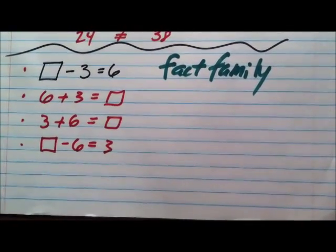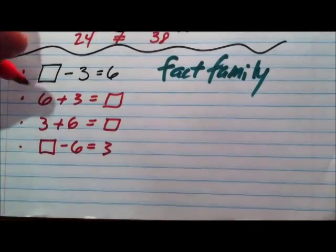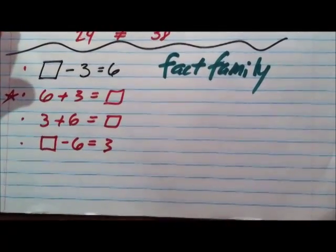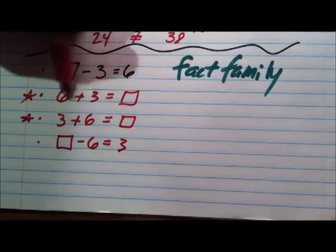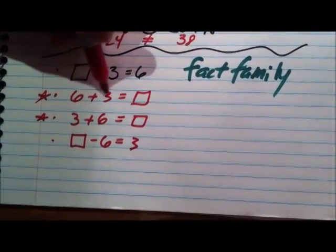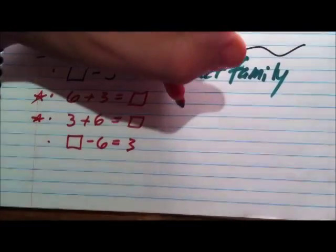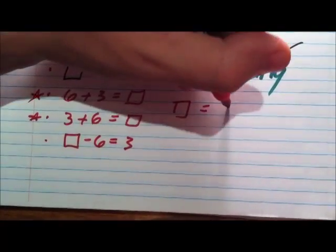So which one's the easiest to use to solve for box? Well, we kind of wrote it out the first time, didn't we? But it's really straightforward to see what box is now. We go 6 plus 3 equals 9. So over here we'll go box equals 9.